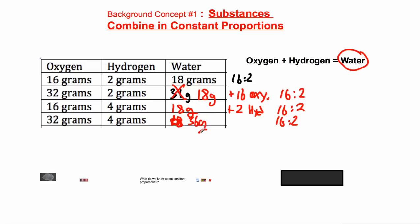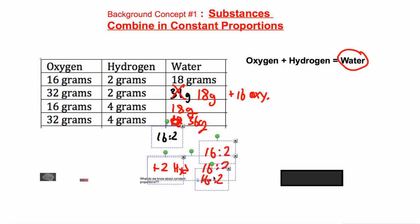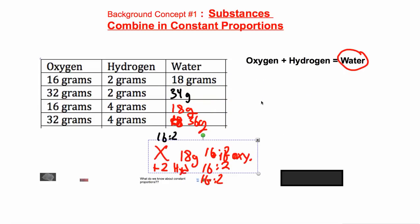That's the idea of constant proportions, and scientists found it happens when you're making new substances. When mixing things where they don't really become a new substance, you can mix them in any proportion. But if you're making a brand new substance, things come together in constant proportions. We'll see how scientists use that in their discovery of the atom.